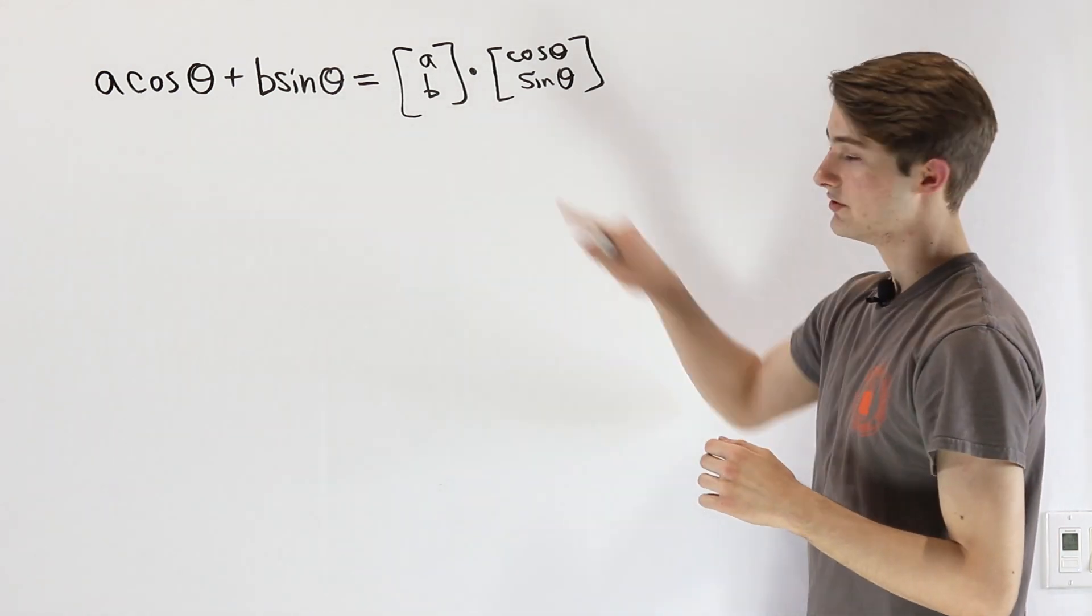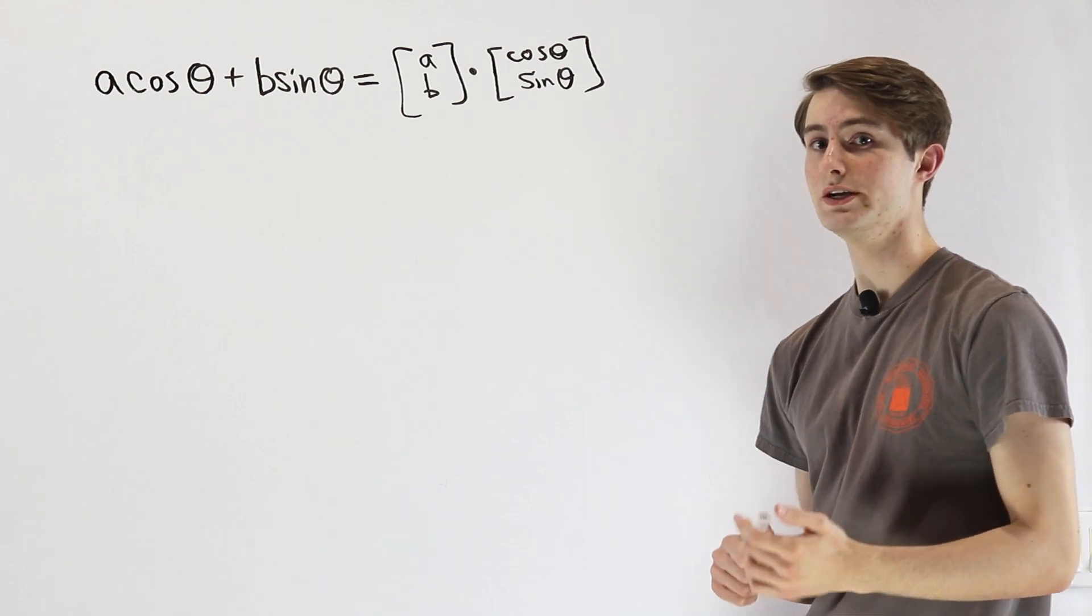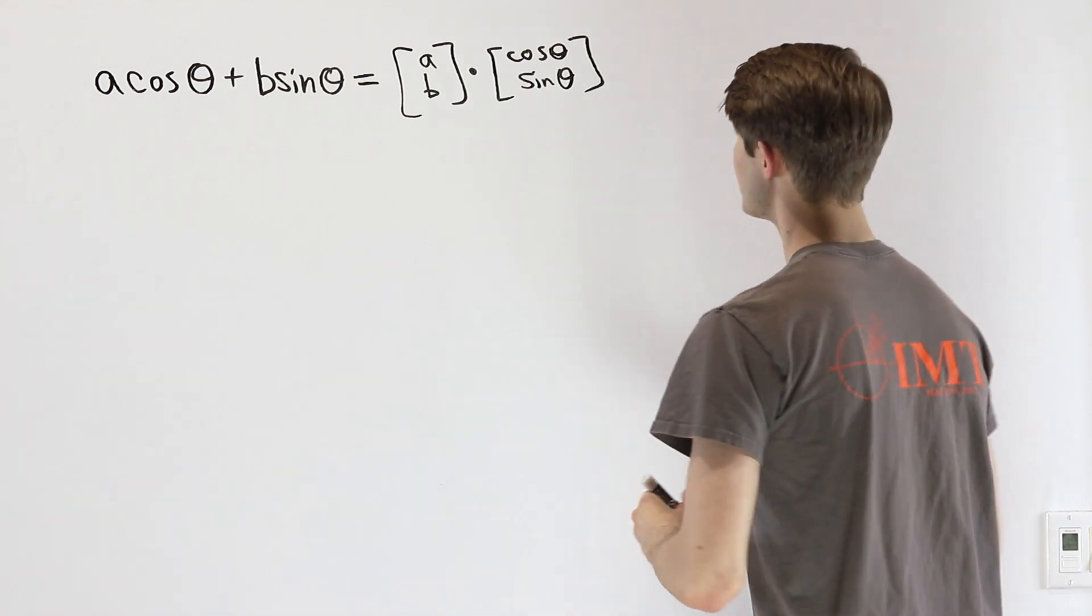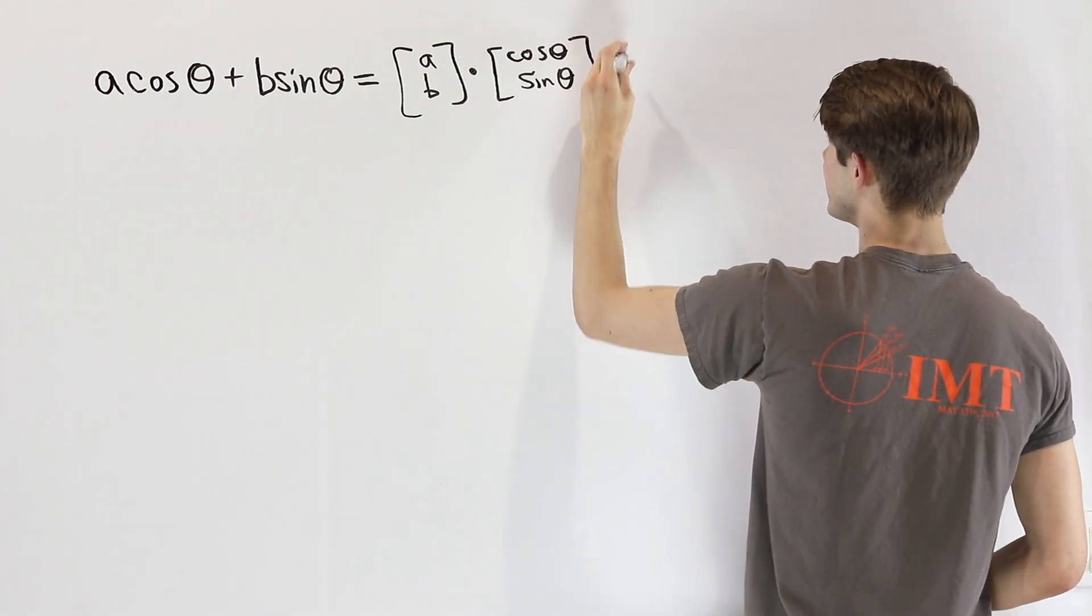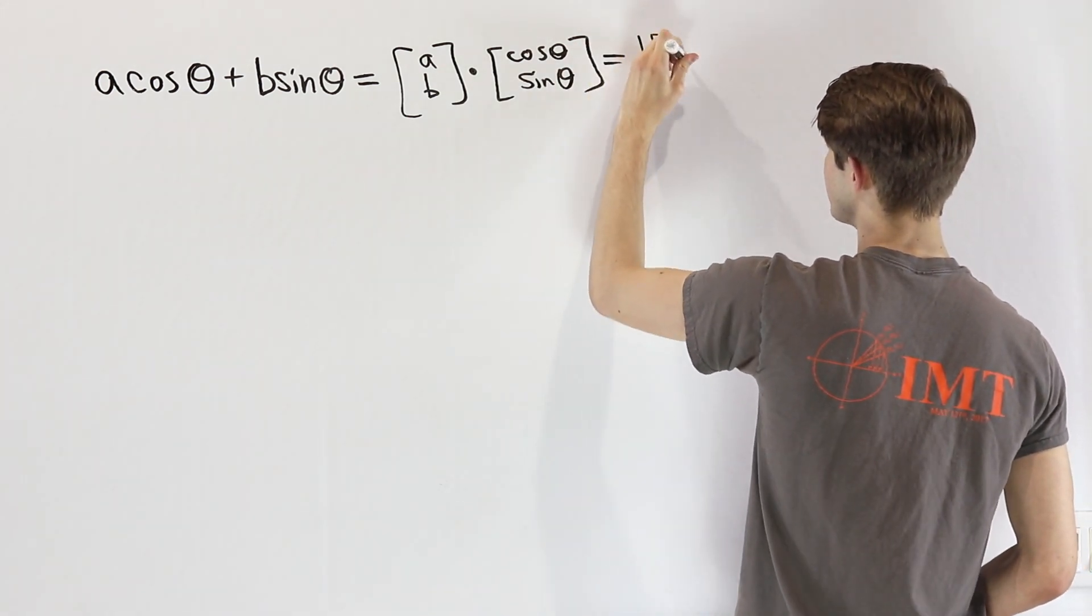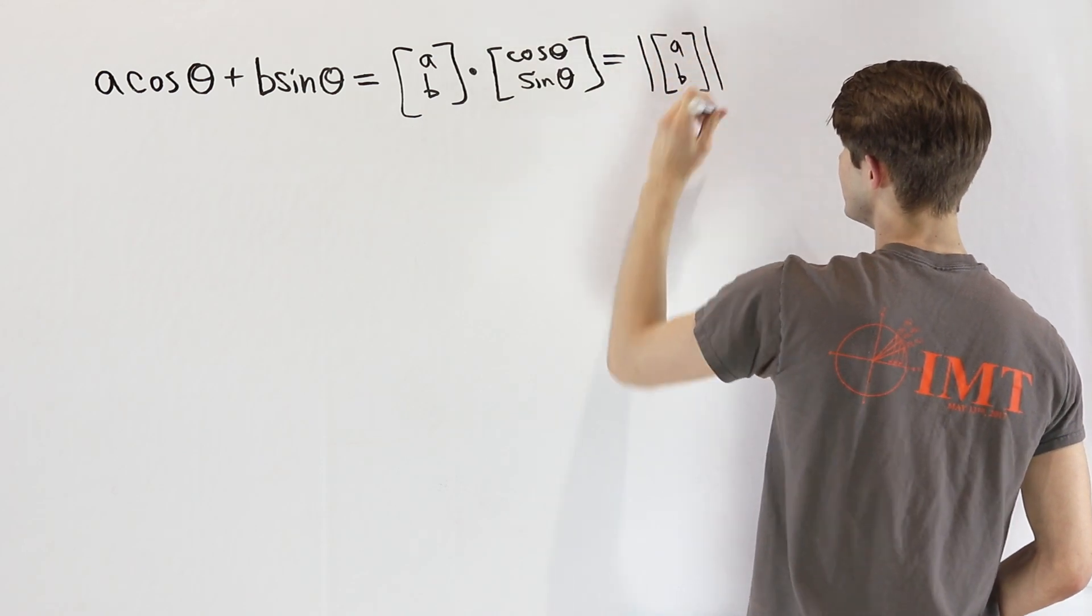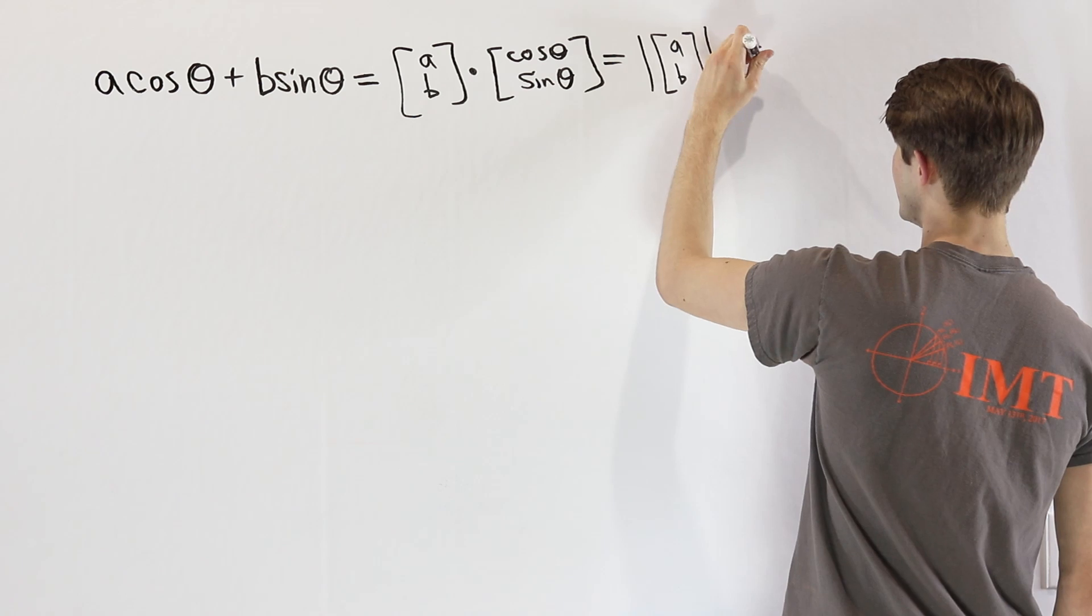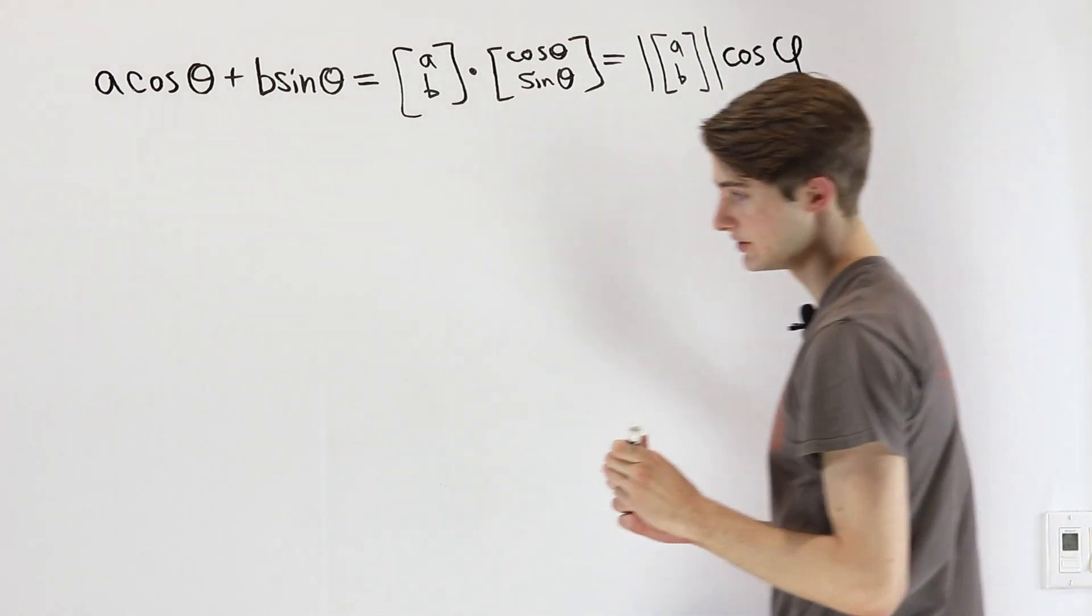The question is why is this useful. The answer is there is one other way that we can express the dot product between two vectors: the magnitude of our first vector times the magnitude of our second vector times the cosine of the angle between the two vectors.